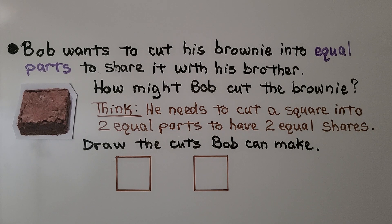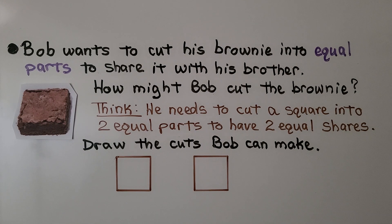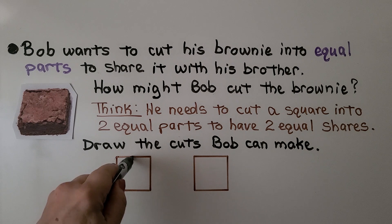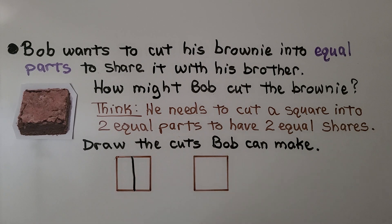Bob wants to cut his brownie into equal parts to share it with his brother. How might Bob cut the brownie? We think he needs to cut a square into two equal parts to have two equal shares — one for him and one for his brother. We need to draw the cuts that Bob can make. He could cut it in half this way, and they would each get an equal share.